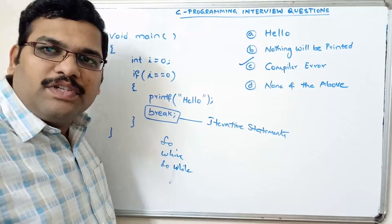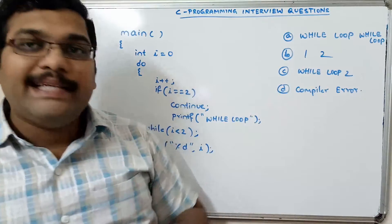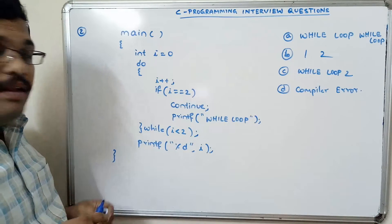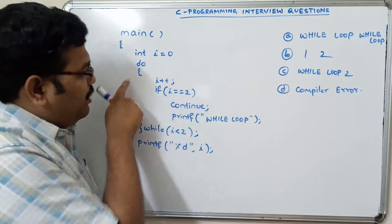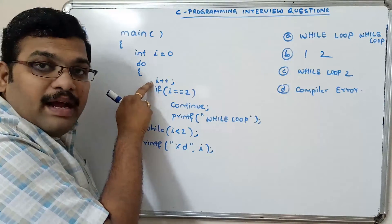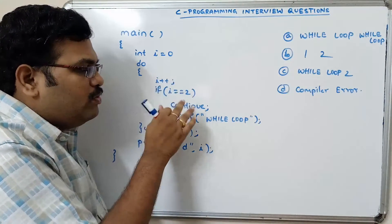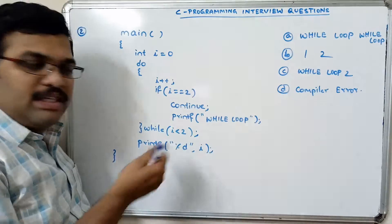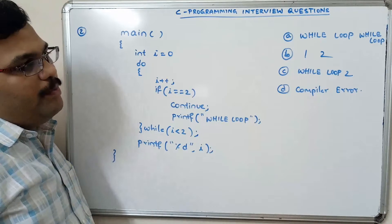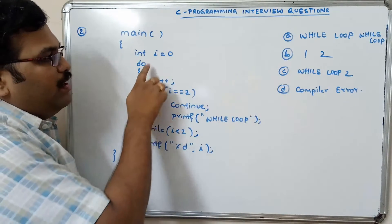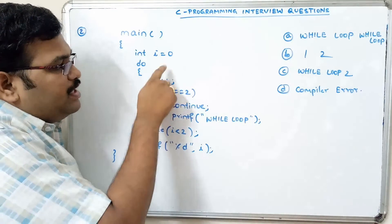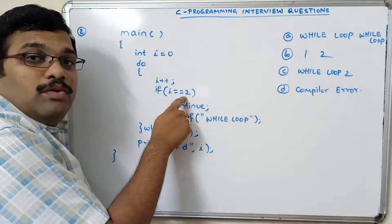Let us move on to the next question. Here a variable i is initialized to zero and we are using a do-while iterative statement. Inside the loop, i is incremented, and we check the condition: if i equals 2, then continue, then print the statement, and while loop closes. Most people will follow this while loop: first i equals zero, then i++ makes it one, and one equals two is false.